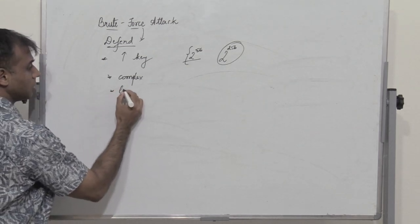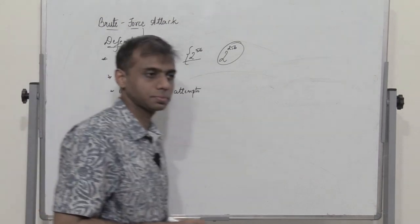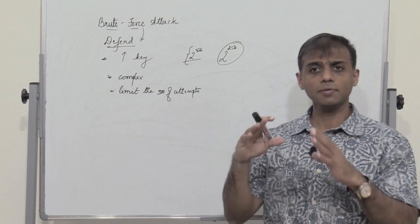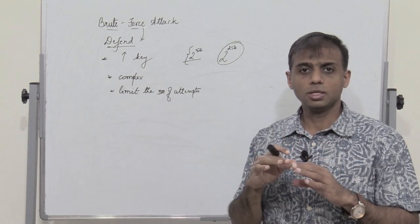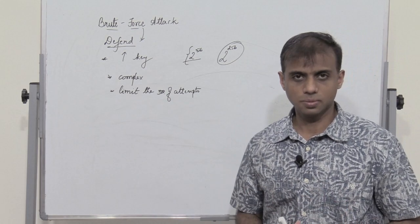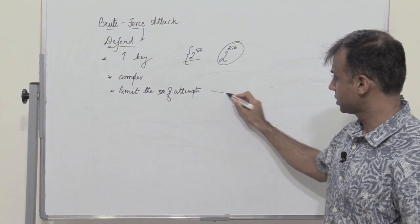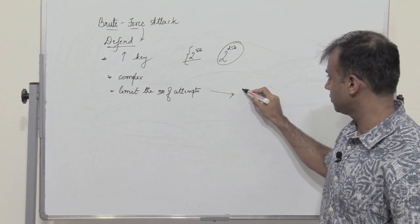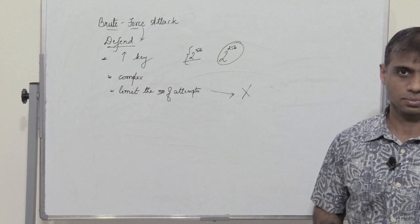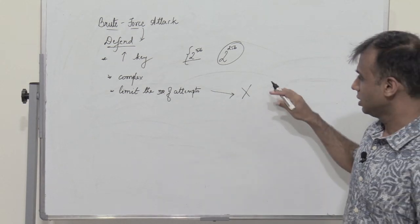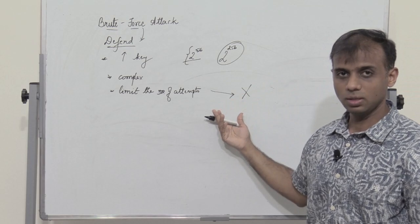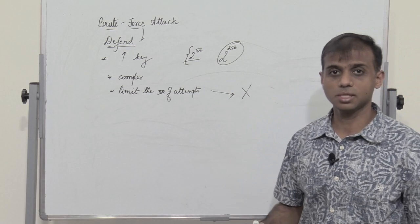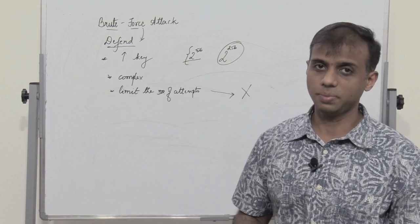The third way is to limit the number of attempts. If we have a login where we type the password to log into a system, we can have a limited number of attempts. If the user fails within these limited attempts, the user is blocked. The user has to remember the password and enter it correctly within these attempts. The number of attempts can be three, five, and so on, depending on the requirement.